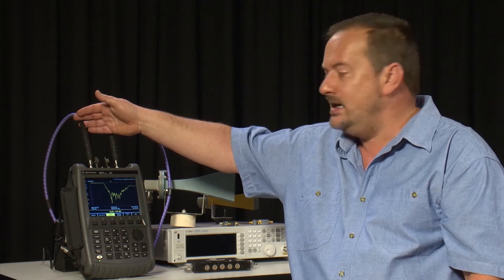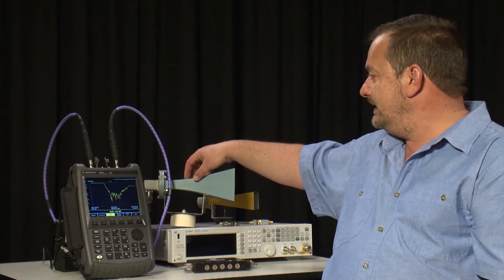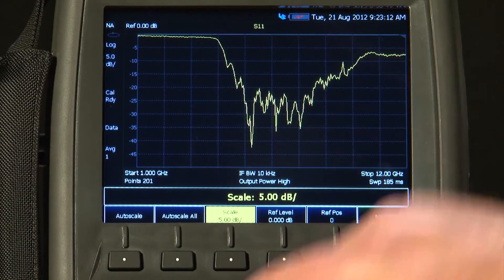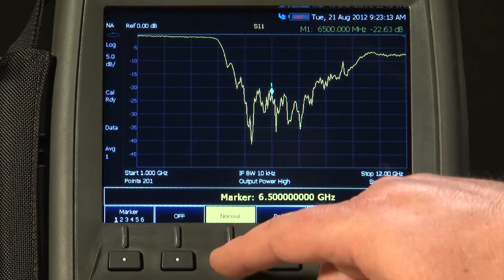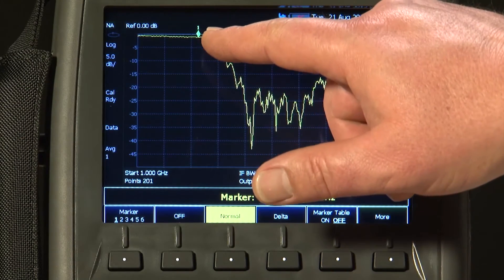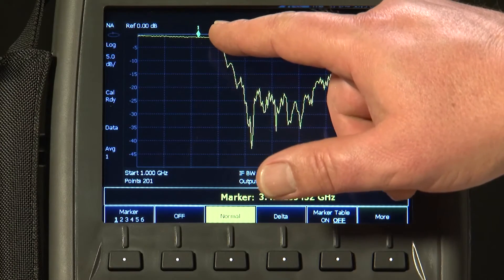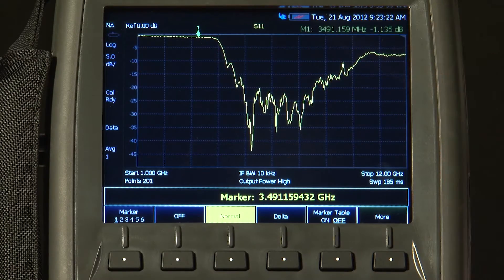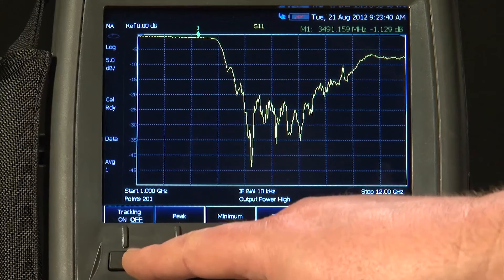So, with a short, high-quality test cable such as this, I can connect the antenna directly to the instrument, and you can see immediately, if I press the Marker button here, we have a marker on the screen, we are immediately measuring very accurately the return loss of this antenna.